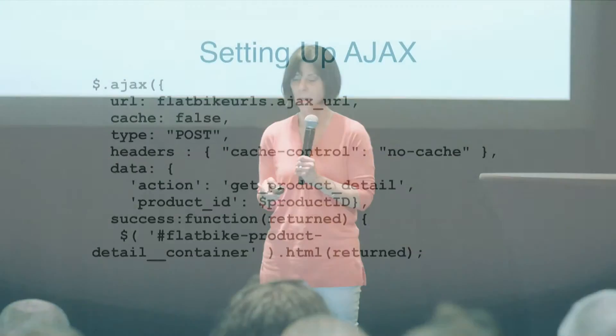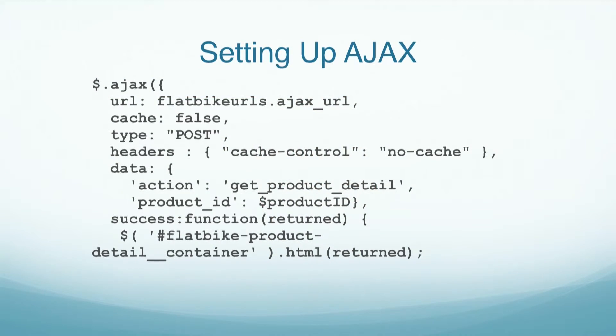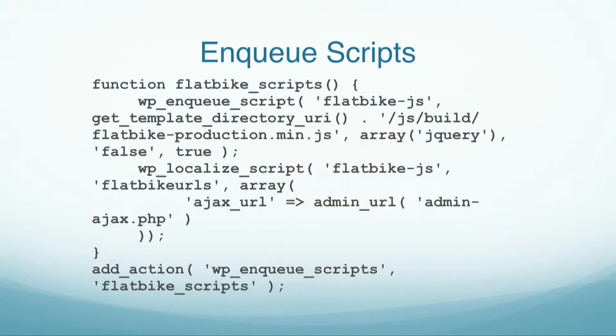If the return from AJAX is successful, I simply replace the HTML in the container with the returned HTML. The container I'm using is the one indicated on the last line — the ID for the container, flatbike_product_detail__container. Following best practice, I'm enqueuing the script. That piece of code you just saw becomes part of my script. It's a minified script — I use Grunt to combine and minify my scripts. The next important piece is the localized script, which is how we got that FlatBikes AJAX URL.